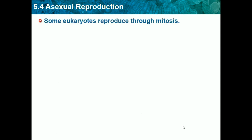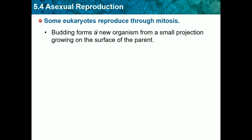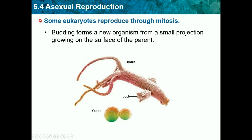Some eukaryotes reproduce through mitosis, which is kind of rare. Examples include budding, which forms a new organism from a small projection growing on the surface of the parent. Here's the bud — the parent basically produces a new organism. For example, if a tree had a small projection on the side and it grew a whole other tree, that would be called budding.